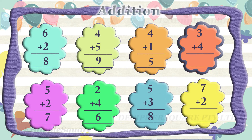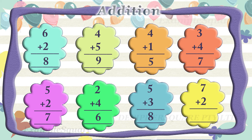What is three plus four? Three plus four equals seven. What is seven plus two? Seven plus two equals nine.